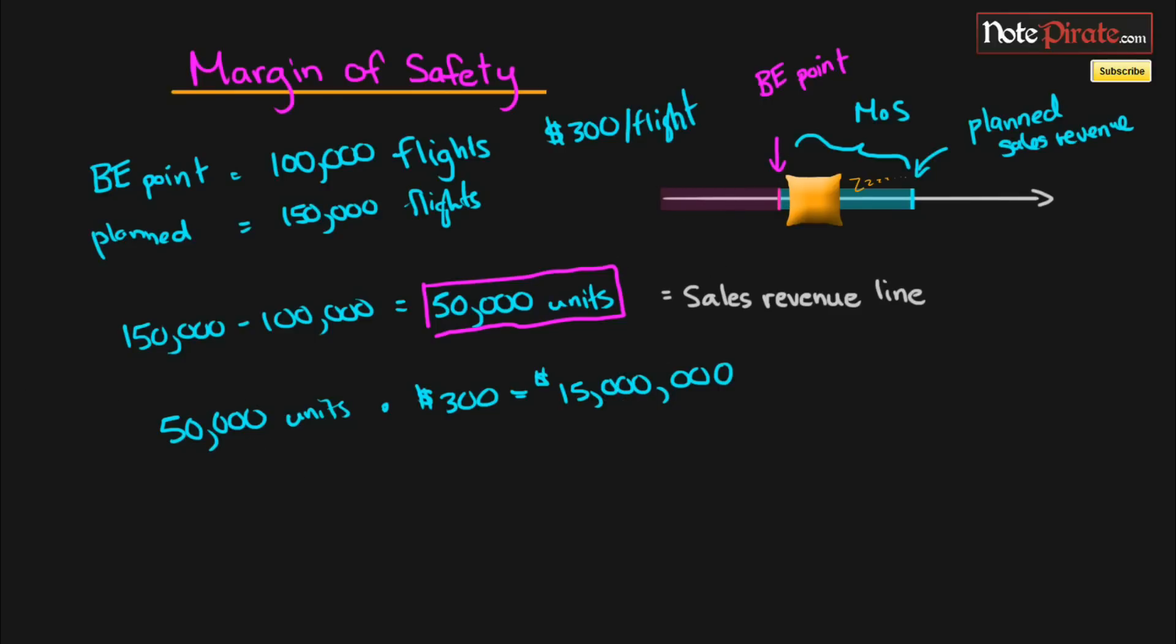In this case, I just use the difference times the revenue per unit. You could also do exactly what we did up here but say 150,000 times 300 minus 100,000 times 300, and that yields the same result. It's just an extra step, so I usually just like to use the difference.